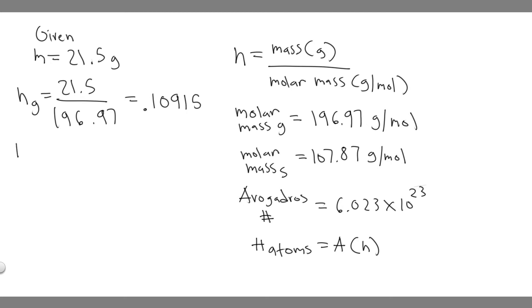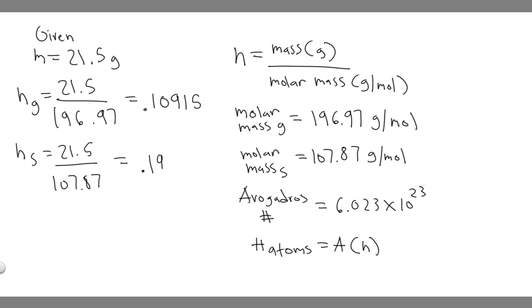Now let's do the silver. It's going to be 21.5 divided by silver's molar mass, which is 107.87. So 21.5 divided by 107.87 equals 0.19931 moles.